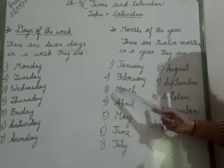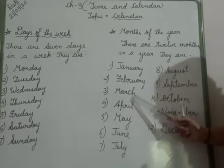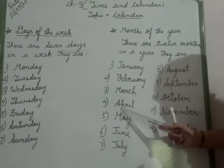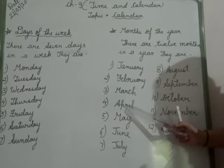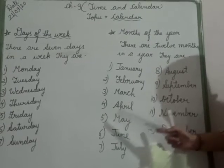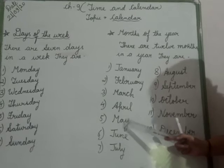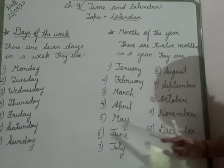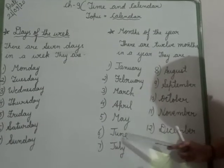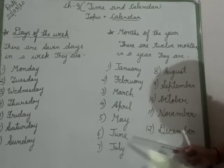Third month, March, M-A-R-C-H. March. Fourth, April, A-P-R-I-L. April. Fifth month, May, M-A-Y. May. Sixth month, June, J-U-N-E. June.